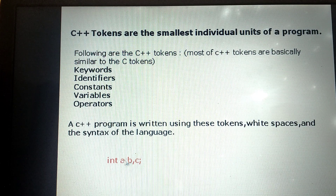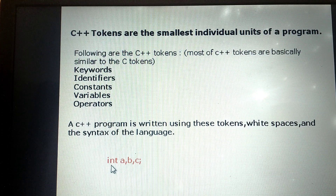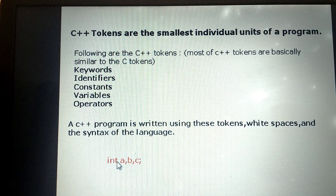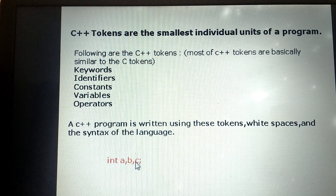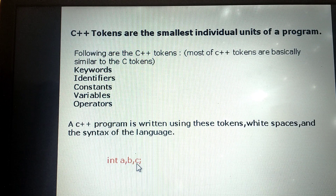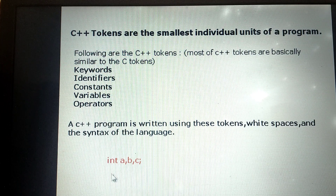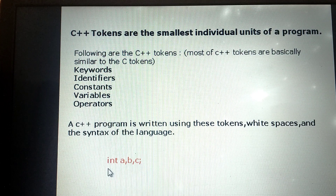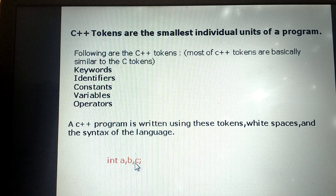How do we write the declaration statement? It starts with the data type — int is the data type and it is a keyword. Then give a space, which represents white space. Then give the names of the variables: a, b, and c are variable names. These are small individual units — tokens. The statement is terminated with a semicolon, which is the syntax rule.